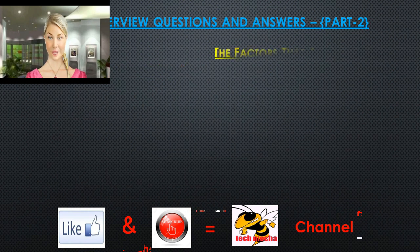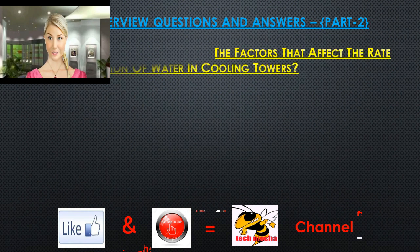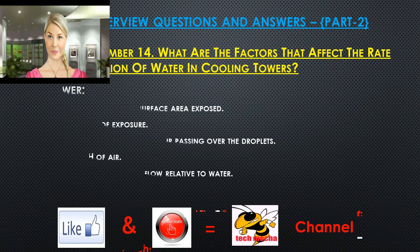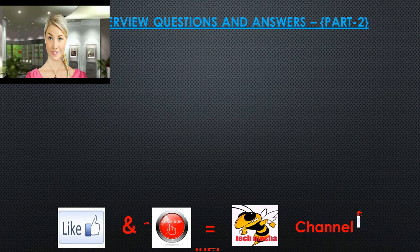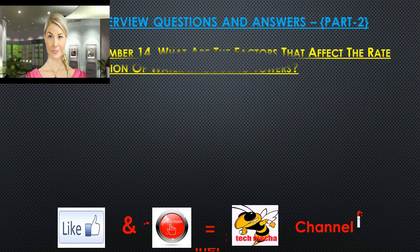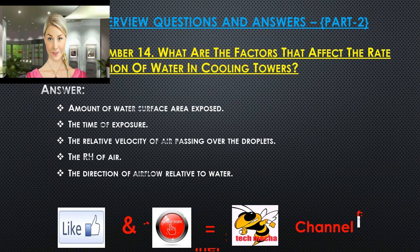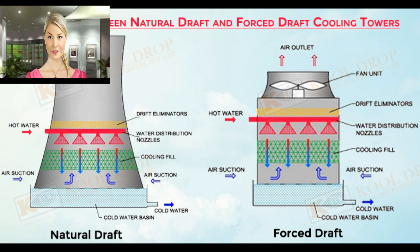Question 14: What are the factors that affect the rate of evaporation of water in cooling towers? The factors are: the amount of water surface area exposed, the time of exposure, the relative velocity of air passing over the droplets, the relative humidity of the air, and the direction of air flow relative to water.